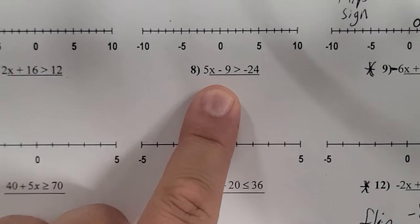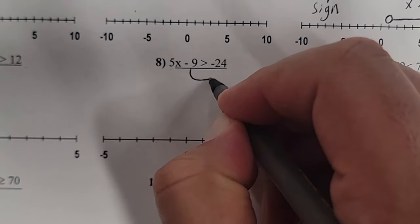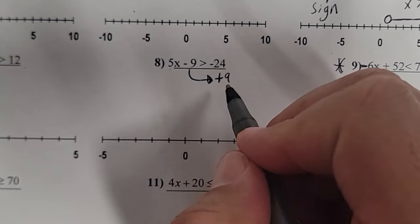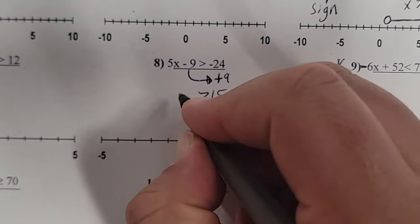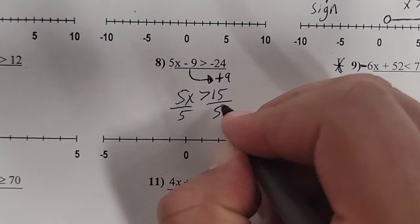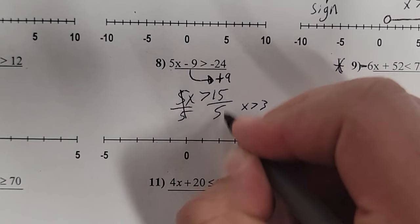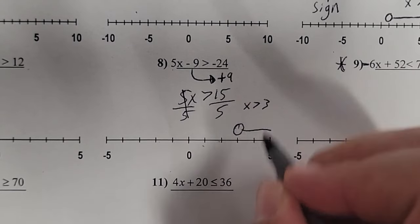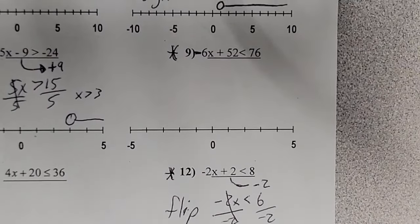For number 8, don't get confused — my x is not negative so there is no flip here. I move the negative 9 to the other side as positive 9, and negative 24 plus 9 gives me 15. My 5x — I just divide by 5, do not flip. My sign stays the same: 15 divided by 5 is 3. So on the number line I find 1, 2, 3 — put your circle and shade to the right. It's only when you have a negative x that the special rule applies.